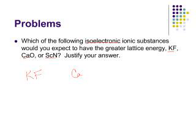We have KF, CaO, and ScN. Potassium is a group 1 metal with a charge of plus 1, and fluorine is a halogen with a charge of minus 1. Calcium has a charge of plus 2, the oxide is minus 2. Scandium is a group 3 metal. It's got those two s electrons and one d electron. It typically forms an ion with a charge of plus 3.